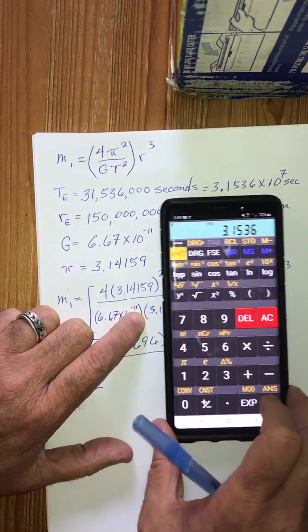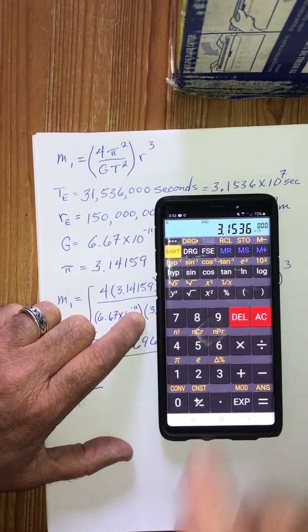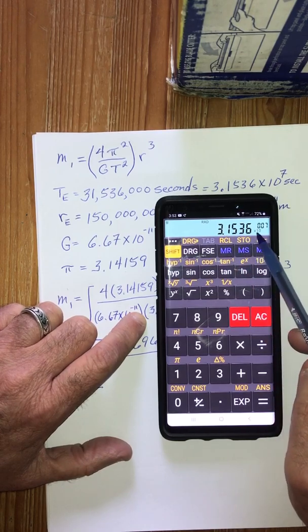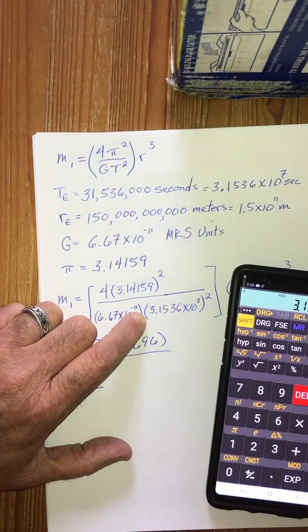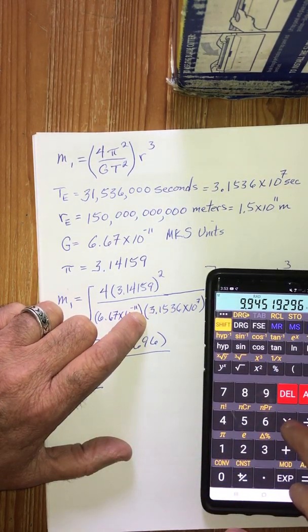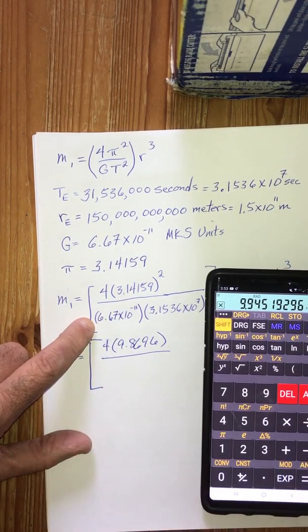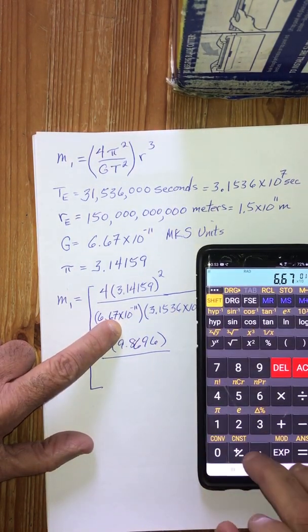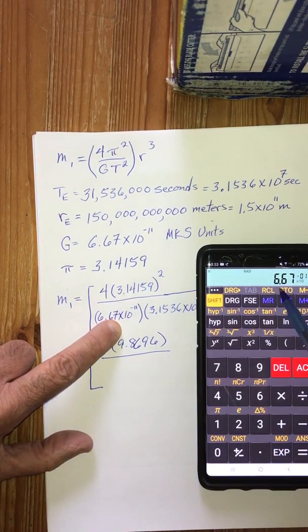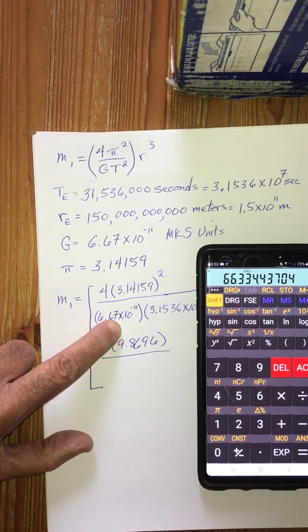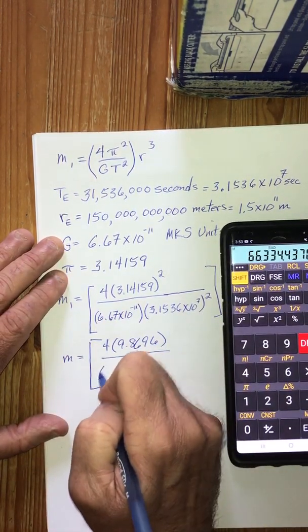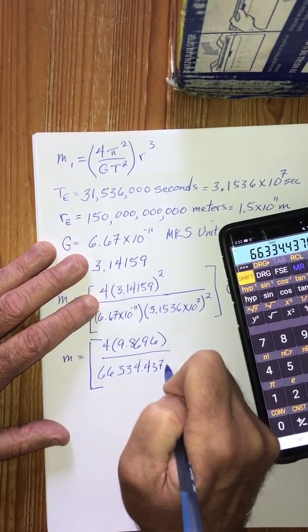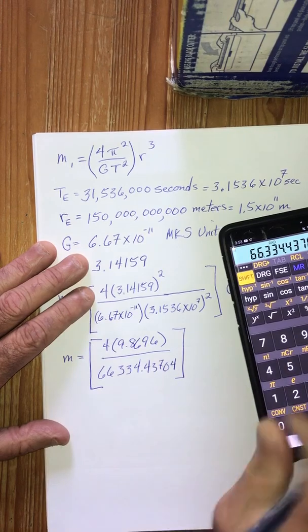Over, let's do 3.1536 times ten to the seventh. The way we handle that on my calculator is we hit the EXP key and then 7. You can see on the display that it says 3.1536 times ten to the seventh. And we're going to square that. And then we're going to multiply that by 6.67 times 10 to the negative 11. So we do exponent 11 negative, and I hit equals, and we get 66334.03704.